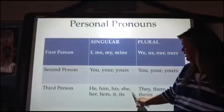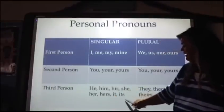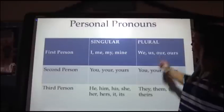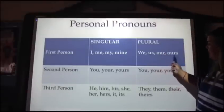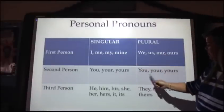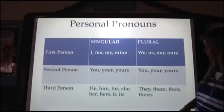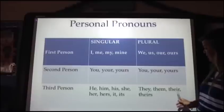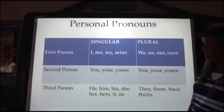Third person singular: he, him, his, she, her, hers, it, and its. On the plural side, we have we, us, our, and ours for first person. You, your, and yours for second person. They, them, their, and theirs for third person.